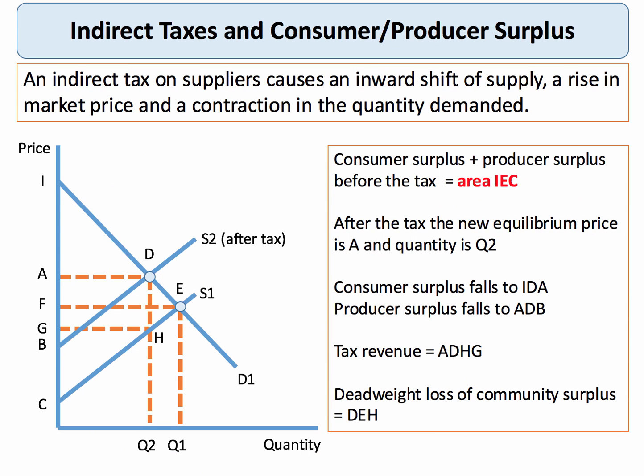With an indirect tax, the supply curve shifts to the left. In my diagram, it shifts from S1 to S2, and quantity demanded contracts from Q1 to Q2.